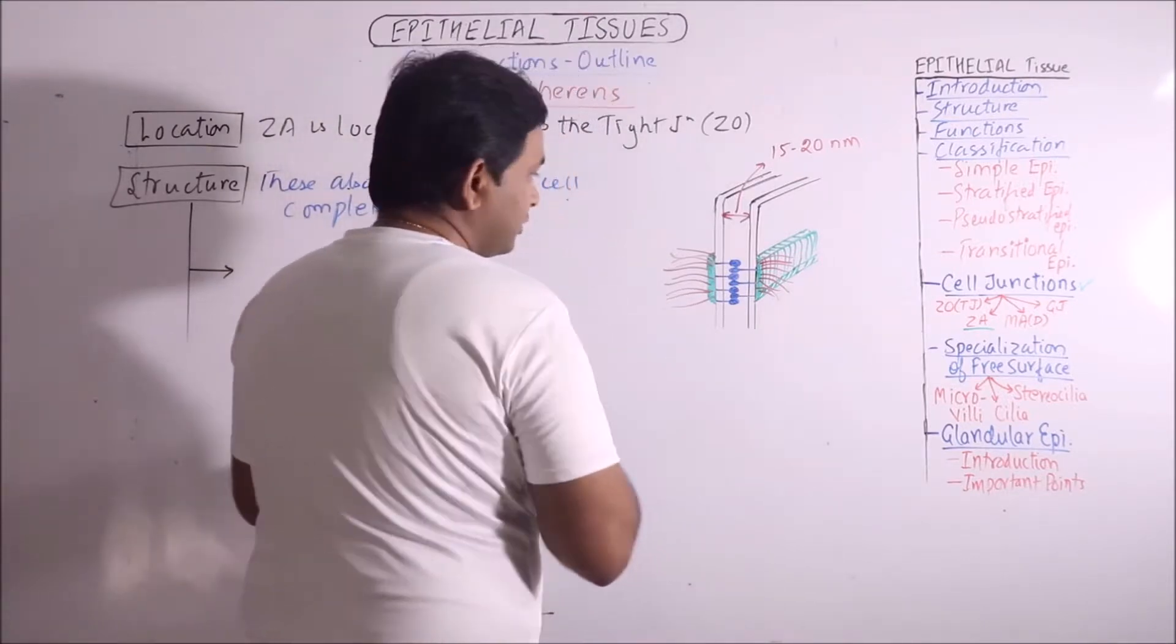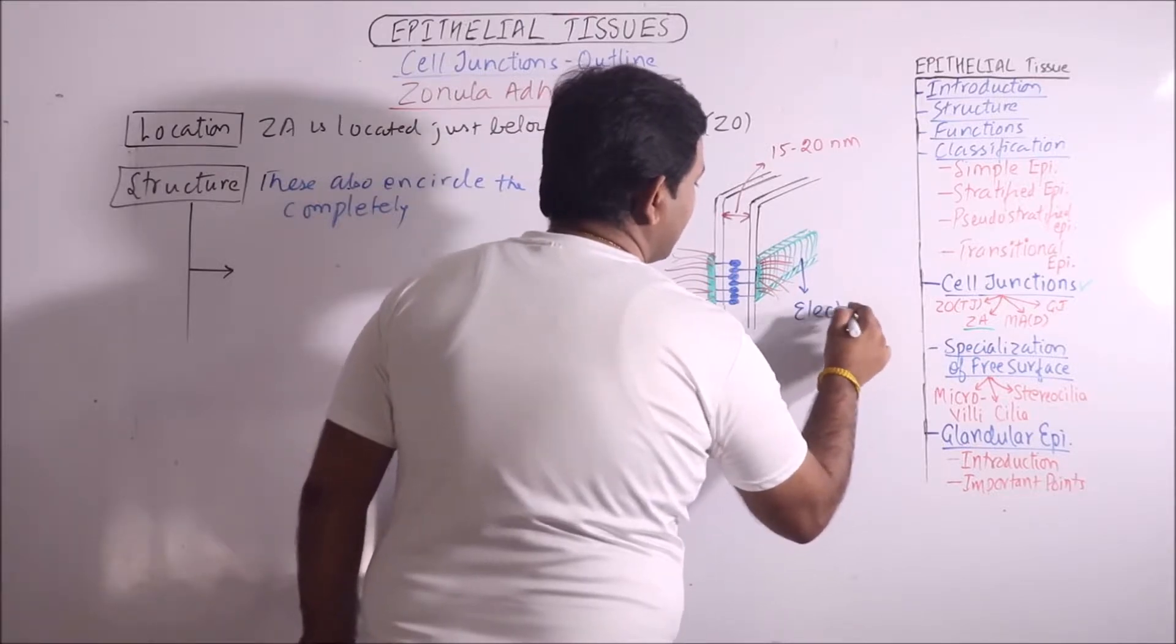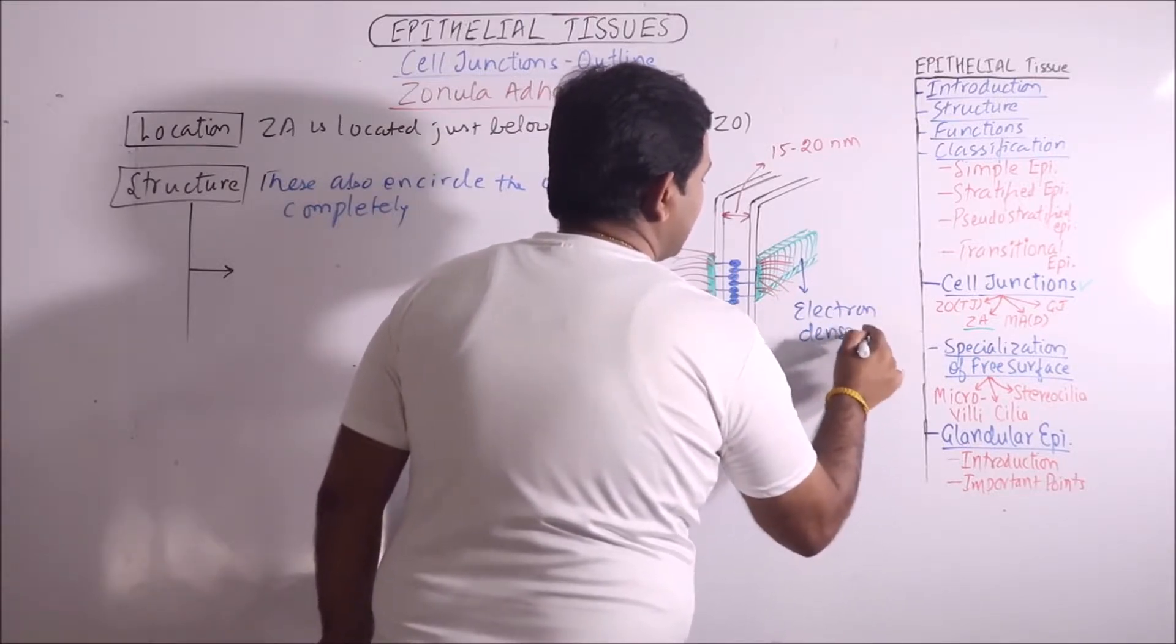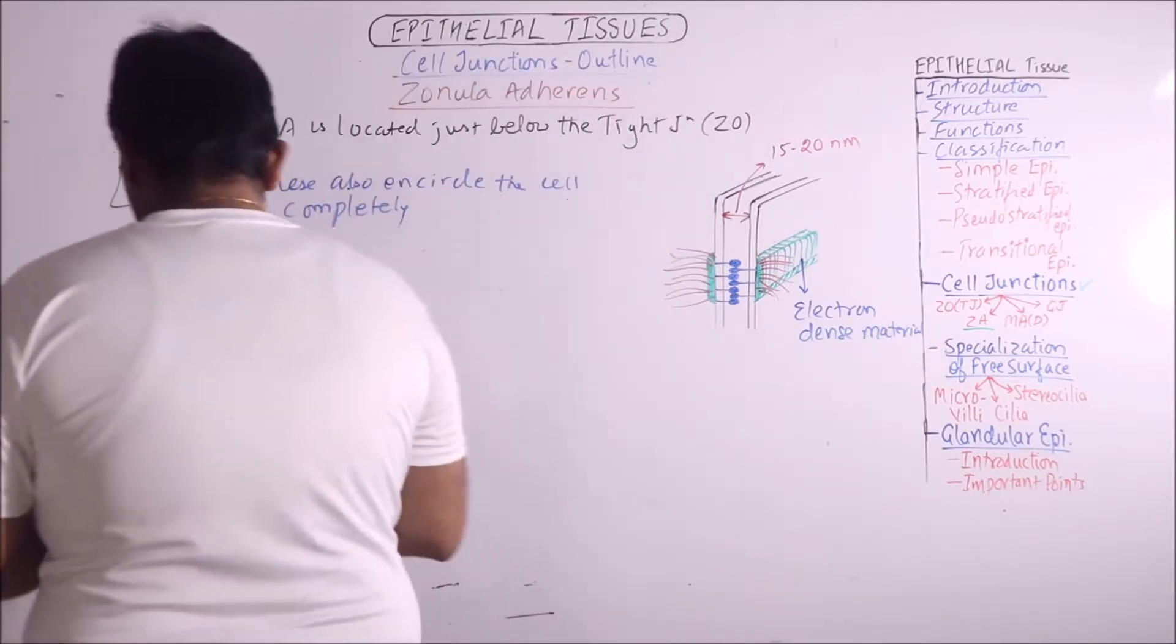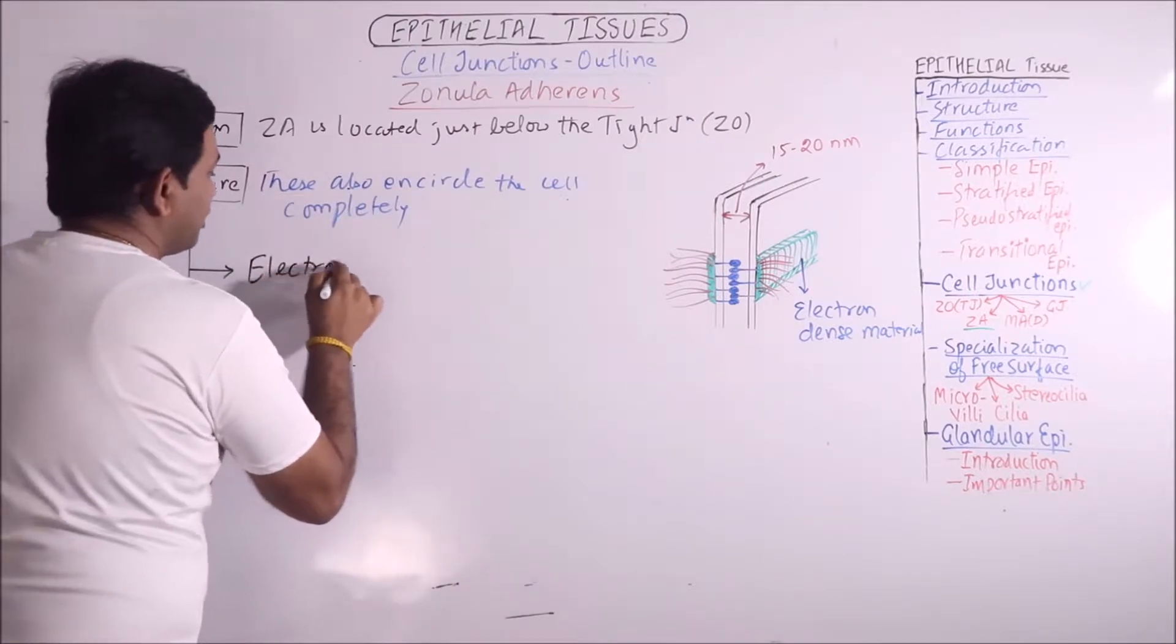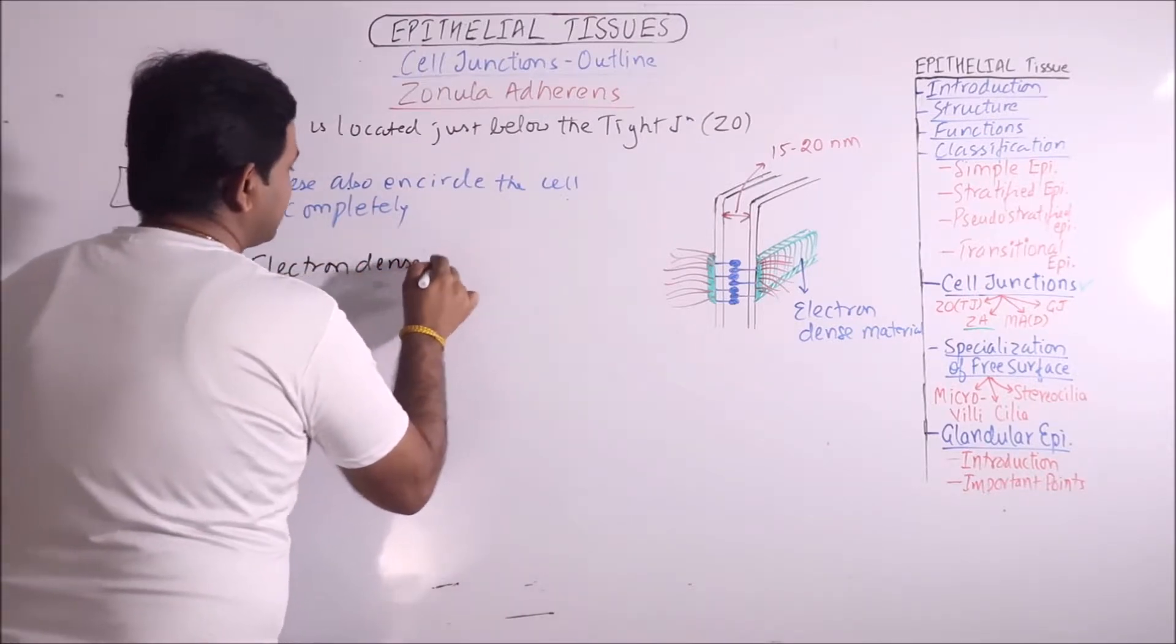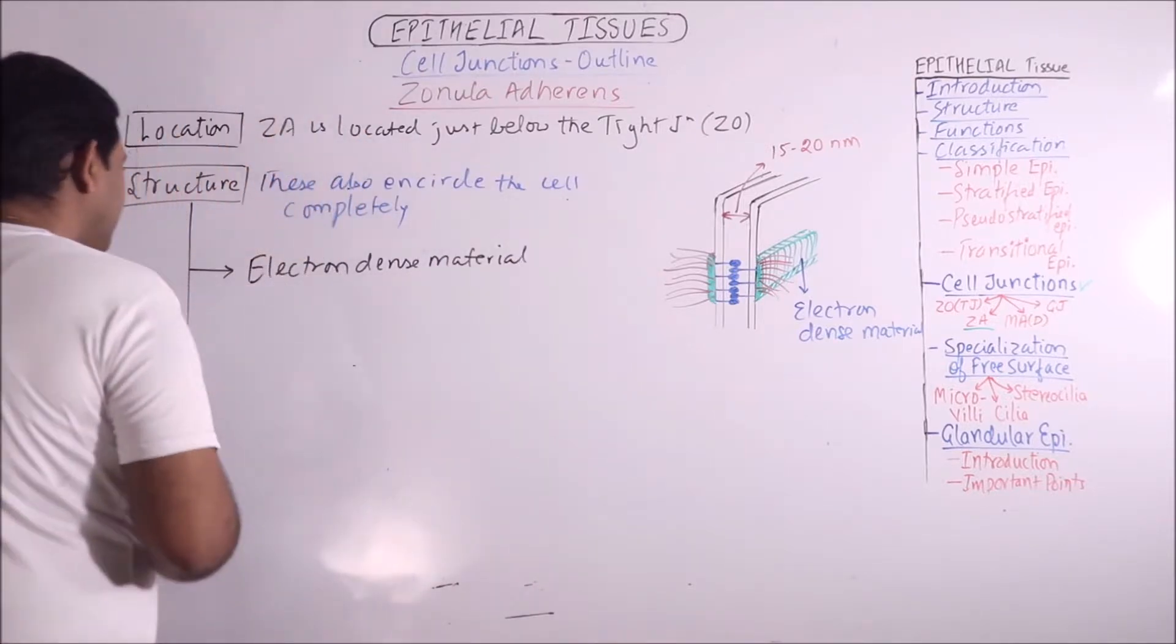Then there is a deposition of electron dense material. So, first is electron dense material which is deposited just like a ring.